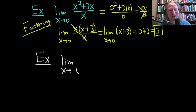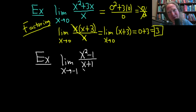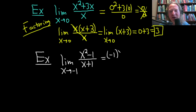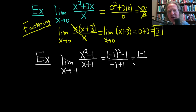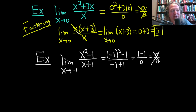Let's try the limit as x approaches negative one of x squared minus one over x plus one. If you plug in negative one, you get negative one squared minus one over negative one plus one. Negative one squared is one, so we get one minus one over zero — zero over zero — and everything falls apart. So this does not work, and we need to do something else. That something else is, of course, factoring.